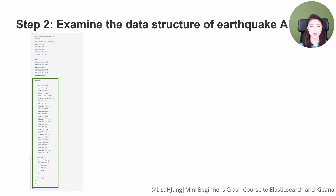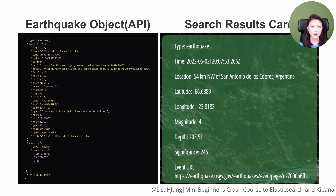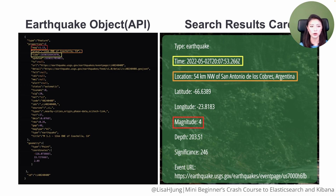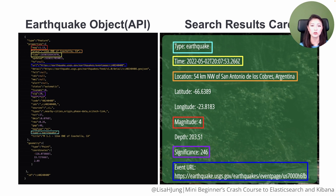For comparison, I put the earthquake object from the API and the search results card side by side. At first glance, you'll see that the earthquake object contains way more information than we need. To save storage, we'll only store the fields for mag, place, time, URL, sig, type, and coordinates array — which includes longitude, latitude, and depth in that order. The API fields that correspond to the info on the card are highlighted in the same colors.